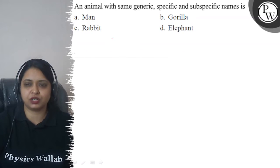The question is: an animal with same generic, specific and subspecific names. The options are A. Man, B. Gorilla, C. Rabbit and D. Elephant.